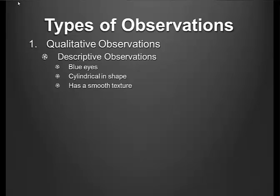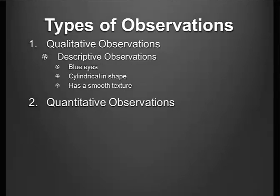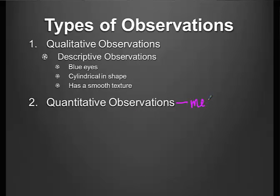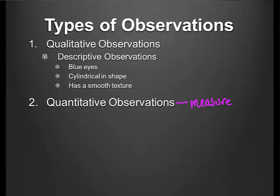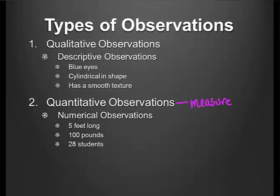The other type we also have to consider is quantitative. When we look at quantitative observations, even though we consider this an observation, this is more about being able to measure and quantify matter — seeing how much of something we have. Maybe we say something is 5 feet long, or it weighs 100 pounds, or it can be as simple as counting how many students are in a classroom.